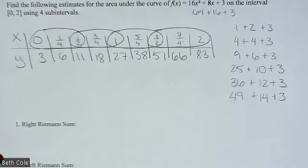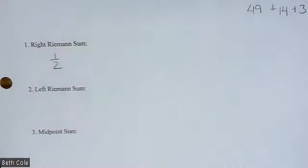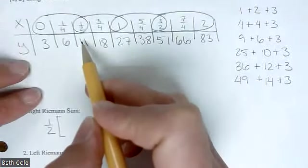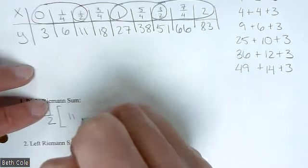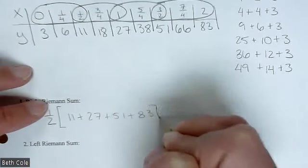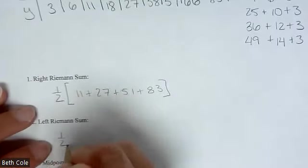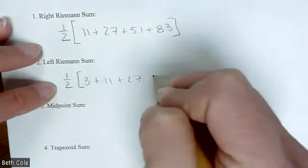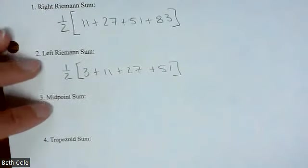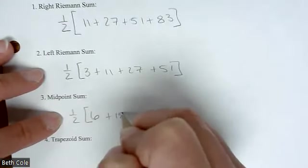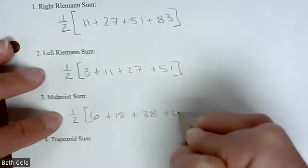All right, so what is the length of each subinterval? One half. That's not going to change. They're all a half. So for the right Riemann sum, we're going to use the numbers on the right. That should be 1/2(11 + 27 + 51 + 83). And then the left one would be 1/2(3 + 11 + 27 + 51). And then the one in the middle would be 1/2(6 + 18 + 38 + 66).